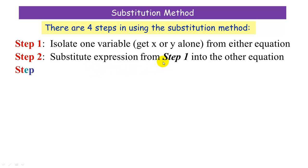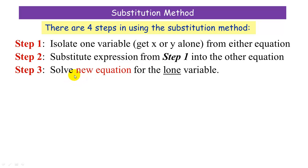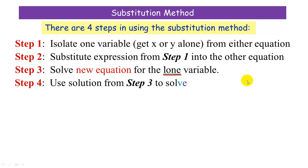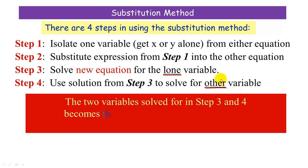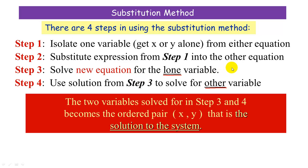Once we've substituted into the equation, we then solve a new equation, and this new equation will have just one variable. So our third step is to solve the new equation for the lone variable. Our last step is, after we've solved for the variable from step three, we are going to use that value and plug it into the other equation to solve for the other variable. In steps three and four, we solve for one variable — say x — and for the other we solve for y. Those two, x and y, represent the ordered pair that is the solution to the system.